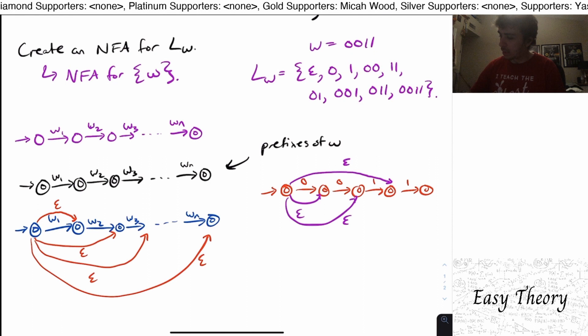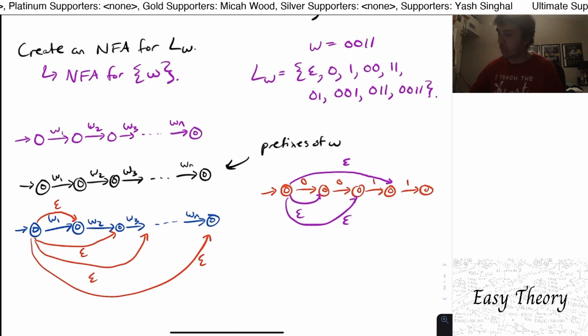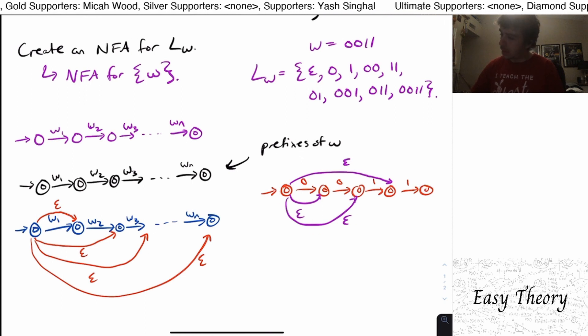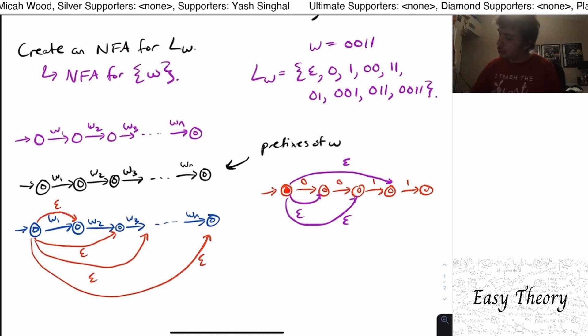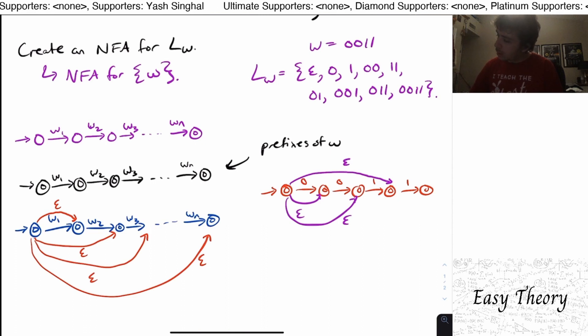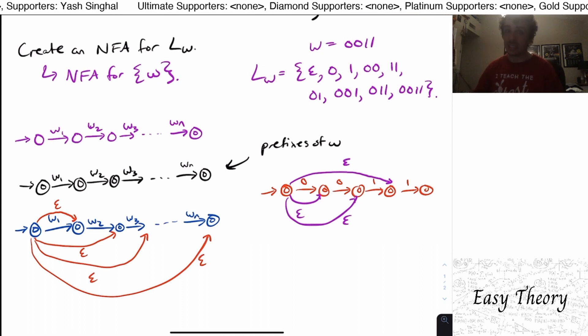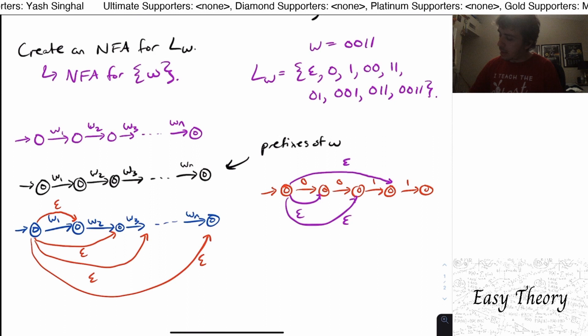So do we get all these substrings? Well, we certainly get the empty string. I can just take the single zero or jump over to here to get the single one or this other way to get the single one too. I can do zero zero straight through. I can do one one by jumping over to here and doing one one. I can do zero one by going over to here zero one. I can do zero zero one just by going straight through. Zero one one I can do by jumping here and then doing zero one one because it's a substring. And then I can get the entire thing for zero zero one one just by going straight through.